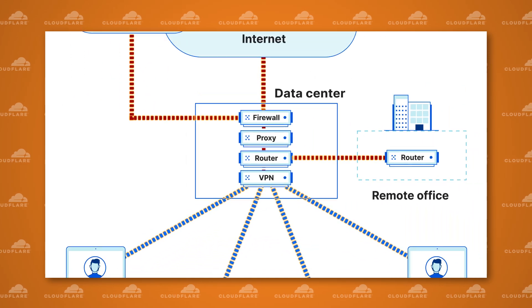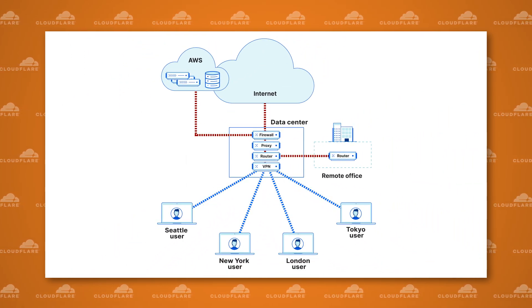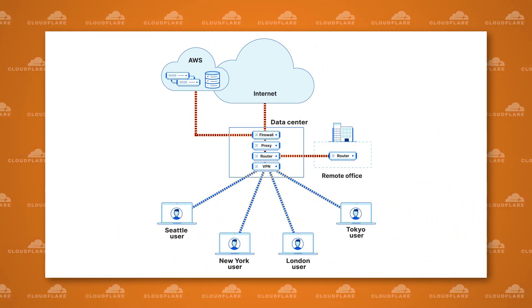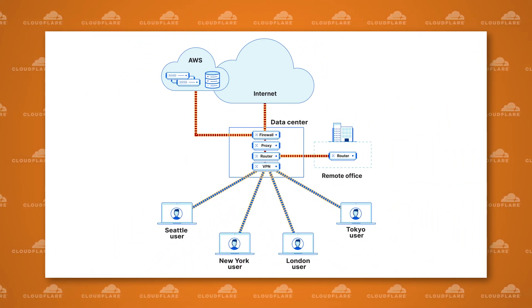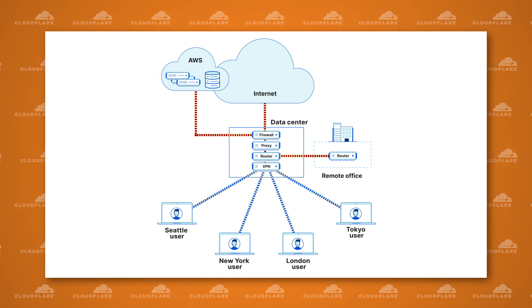The old way of doing things was to have users either come into a physical office or connect remotely via a VPN, giving them access to that corporate network so they could access the application. But these VPN solutions use on-premises hardware appliances through which every user request passes, creating a bottleneck and a security risk.